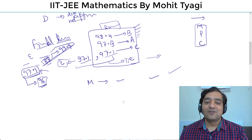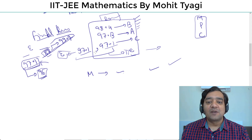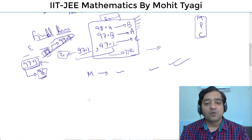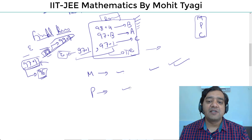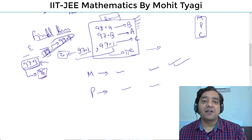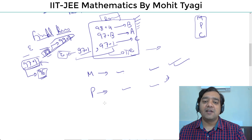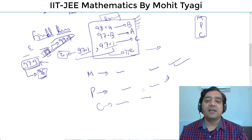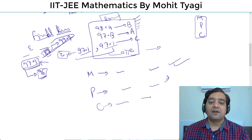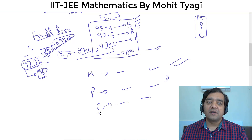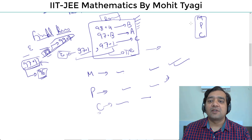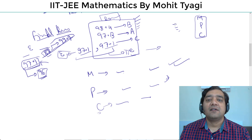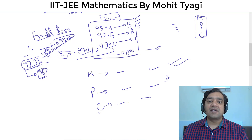Jokes apart — अगर total percentile के बाद Math भी match कर जाए, तो फिर उसके बाद Physics का number आएगा। Physics में जिसका percentile better होगा वो ऊपर जाएगा, और last में number आएगा Chemistry का। Chemistry का भी role आएगा of course।